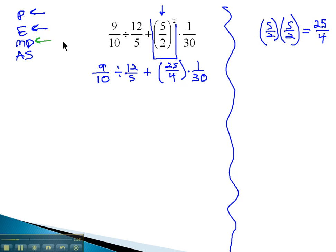Next, we move on to multiplication and division, which must be done from left to right. Left to right means we're going to do the division first, 9 tenths divided by 12 fifths.